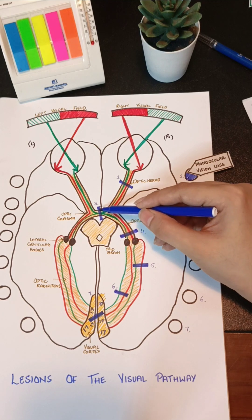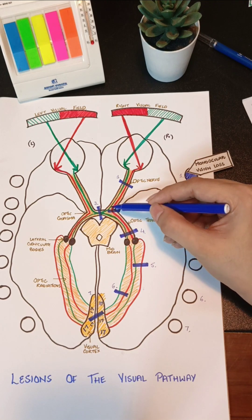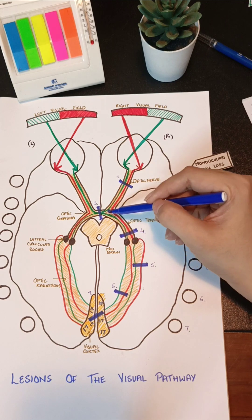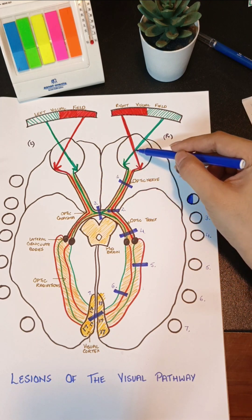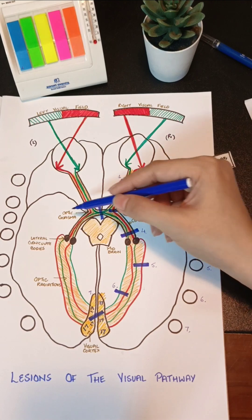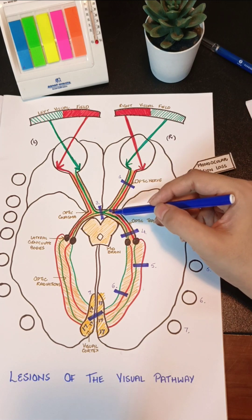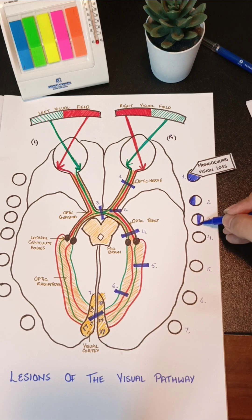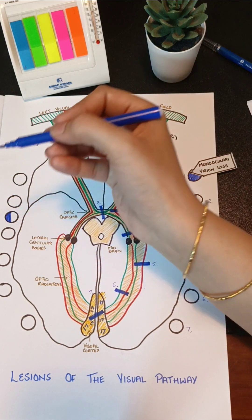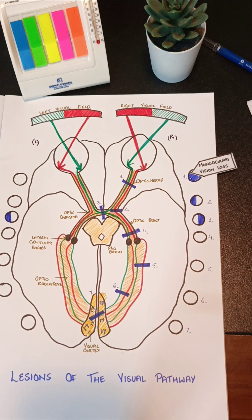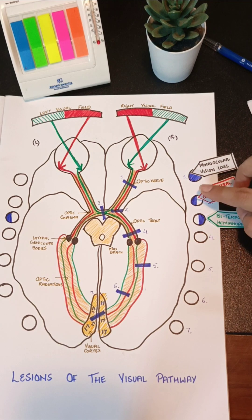Lesion number three causes interruption at the center of the optic chiasma, involving the nasal fibers decussating from both sides — fibers going from left to right and from right to left. Since the nasal fibers carry the temporal field of vision of both eyes, the temporal field of both eyes will be lost. This condition is called bitemporal hemianopia — loss of the temporal field on both sides.